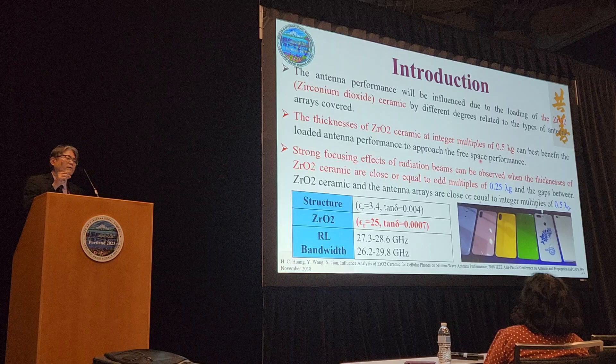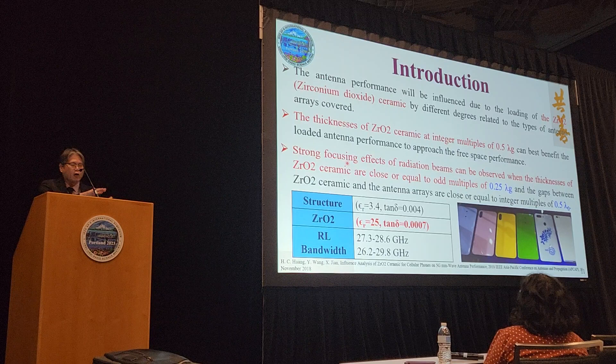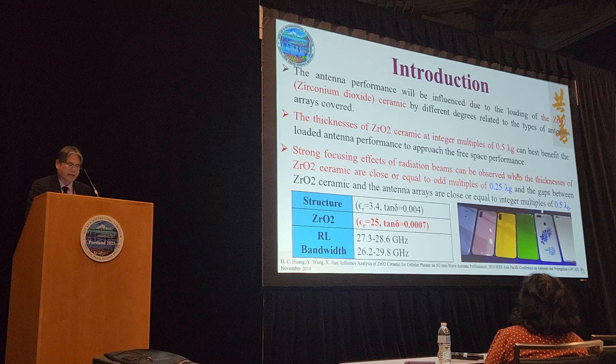Second, there will be a strong focusing effect on the radiation pattern when the thickness of the ceramic is close or equal to a multiple of 0.25 lambda g, and the gaps between the ceramic and the antenna array are close or equal to an integer multiple of 0.5 lambda g.